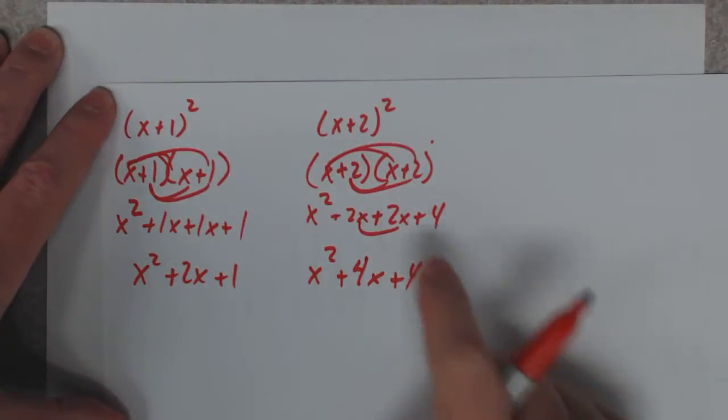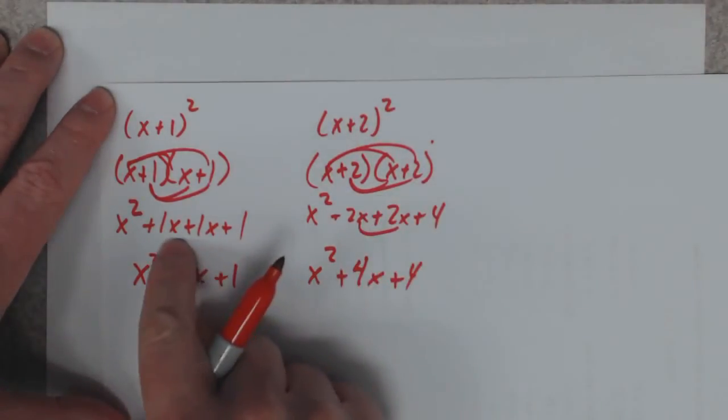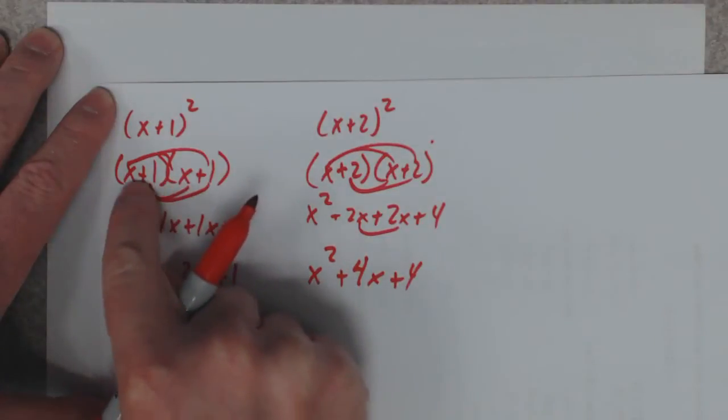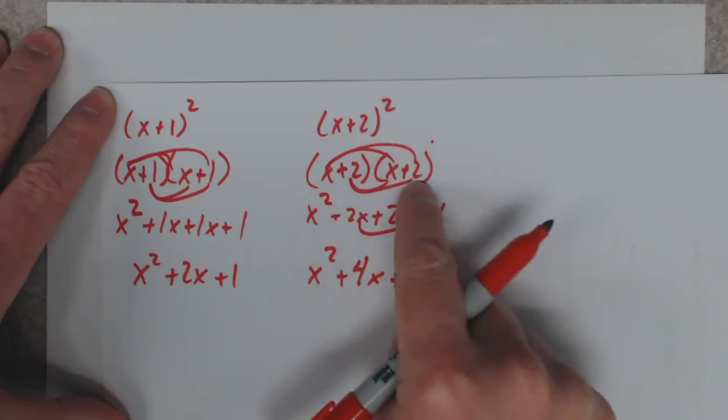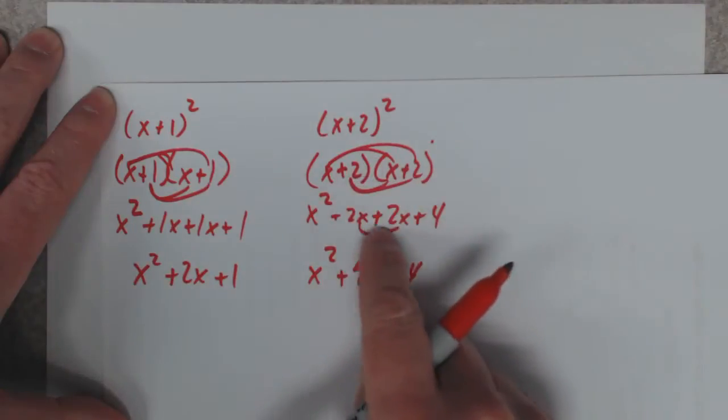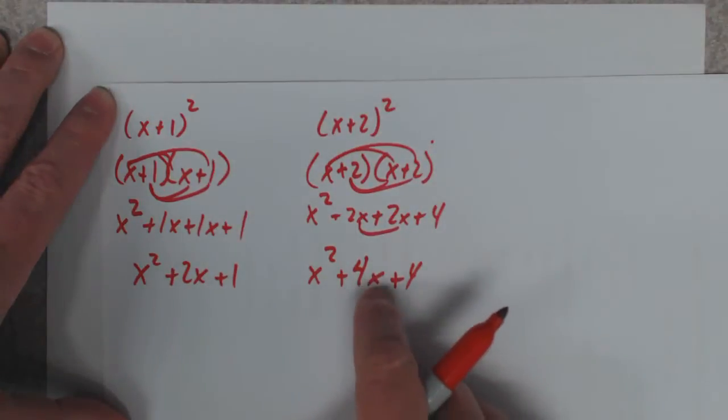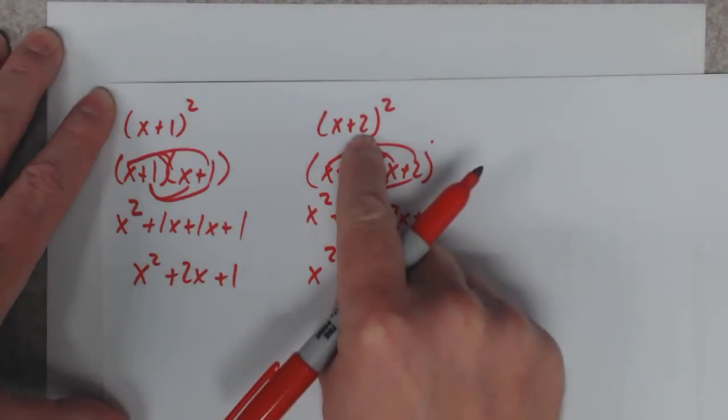I don't know if you see a pattern. Do you notice how that's always going to be the same number there? 1x and a 1x, 2x and a 2x. That's always going to be the same right there. So you can find that middle term by simply doubling that number.